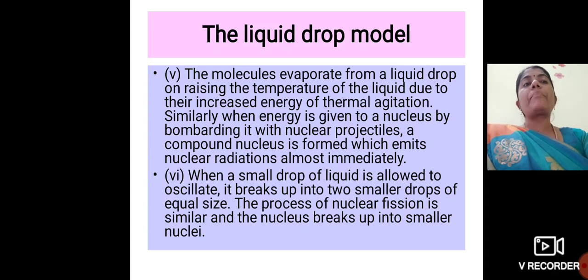The fifth point is, the molecules evaporate from a liquid drop on rising the temperature of the liquid due to their increased energy of thermal agitation. Similarly, when energy is given to a nucleus by bombarding it with nuclear projectiles, a compound nucleus is formed which emits nuclear radiations almost immediately. And the last point is, when a small drop of liquid is allowed to oscillate, it will break up into smaller drops of equal size. The process of nuclear fission is similar and the nucleus breaks up into smaller nuclei.